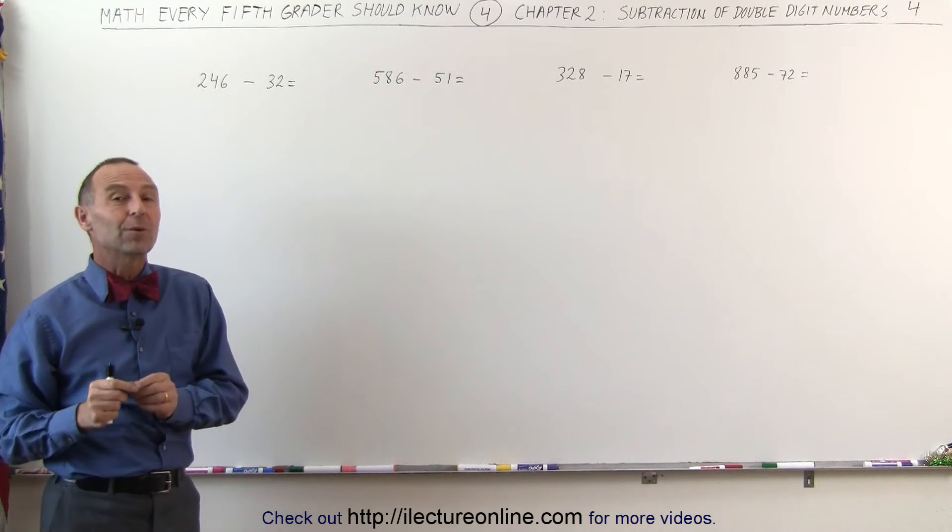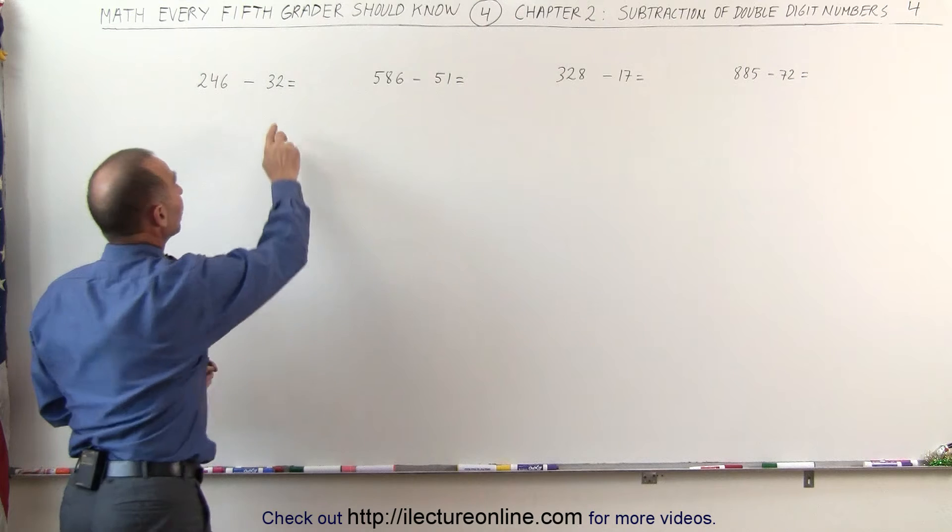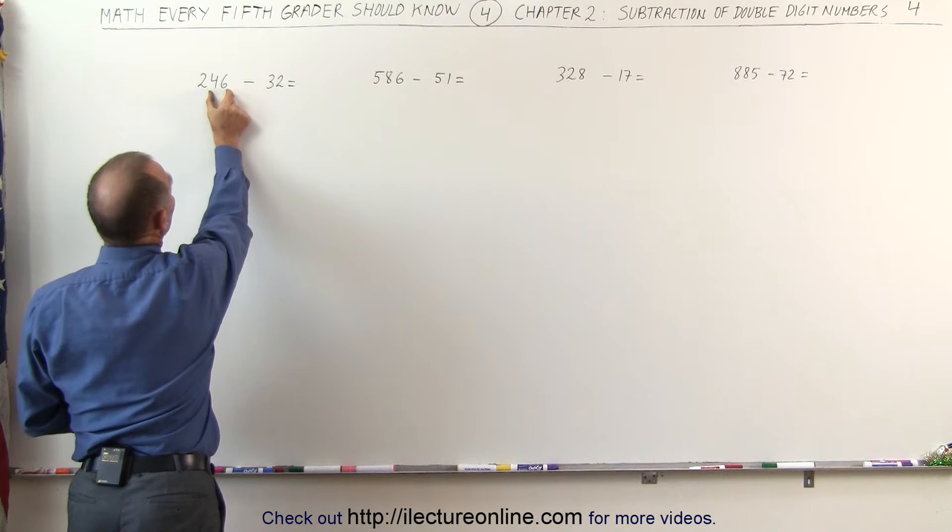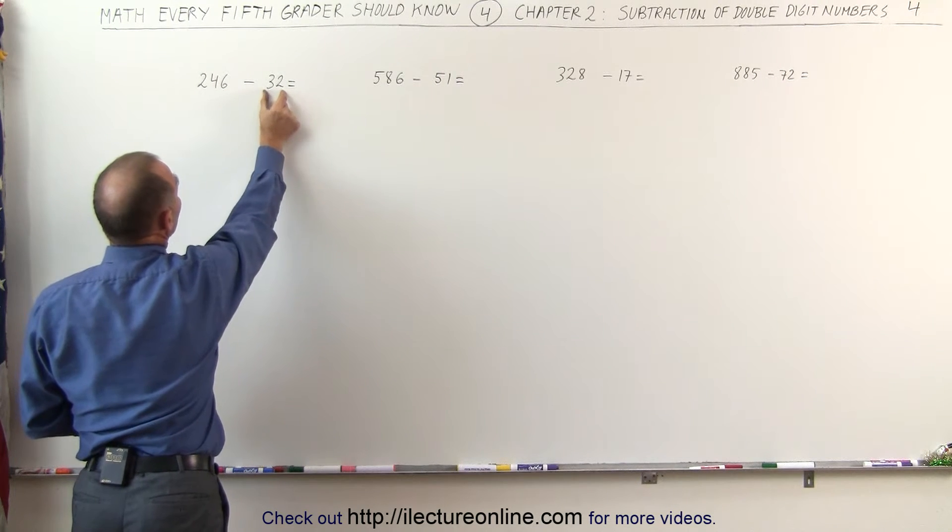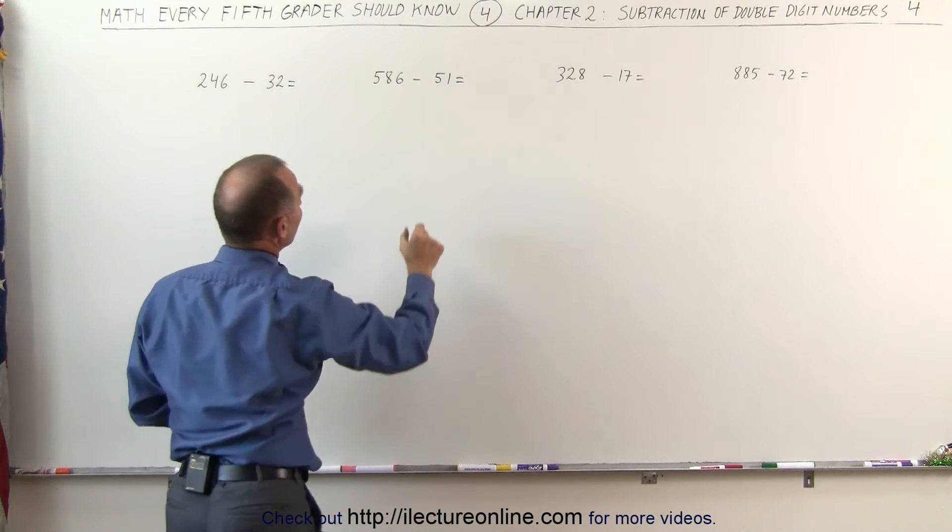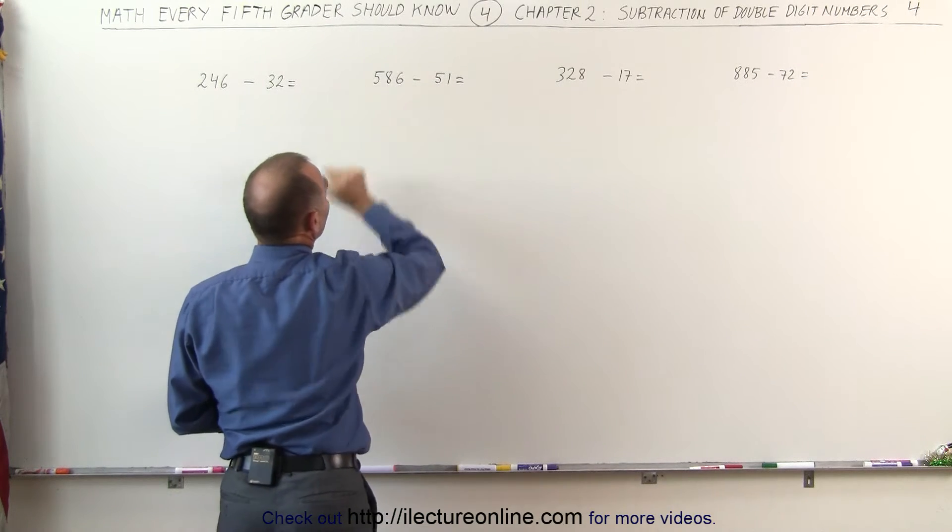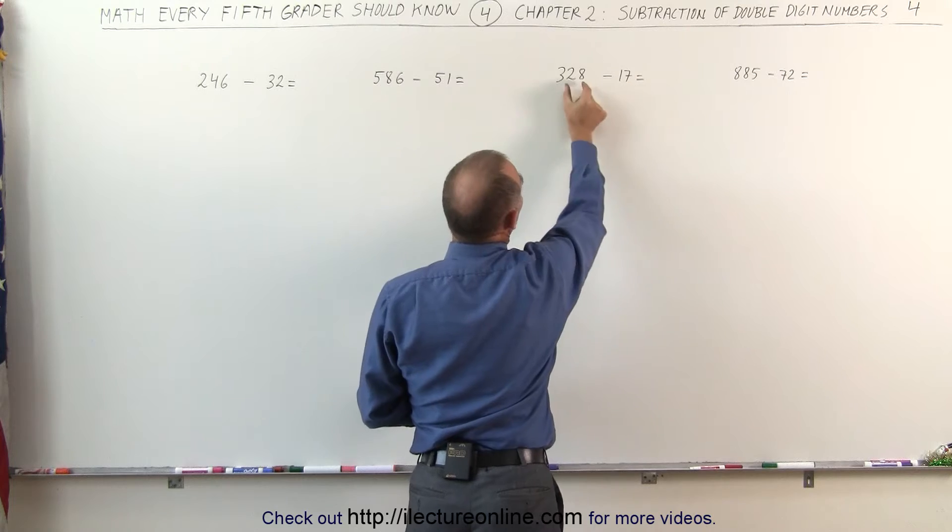The first thing you need to do is take a look at this number right here to see if it's smaller than the two digits over here. And in this case, it is. 32 is smaller than 46. Here we can see that 51 is smaller than 86, 17 is smaller than 28, and 72 is smaller than 85.